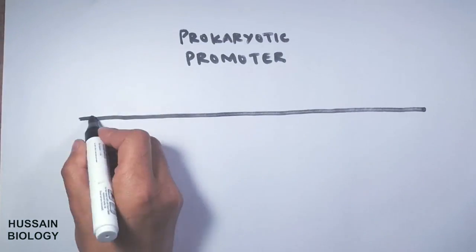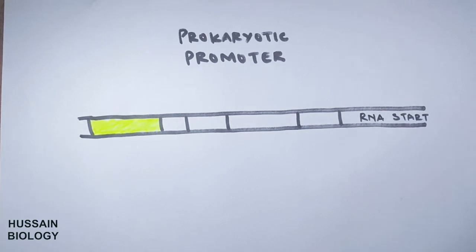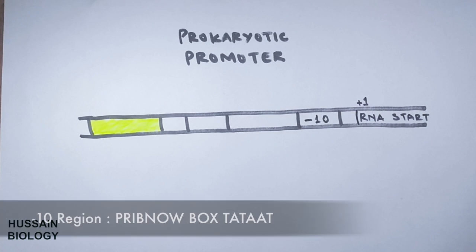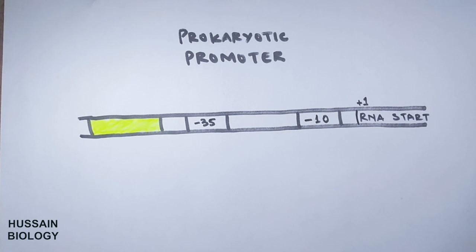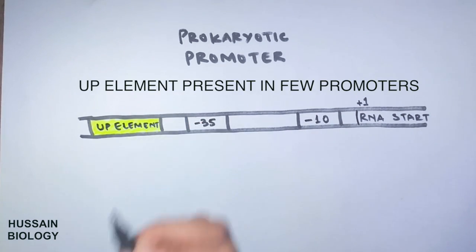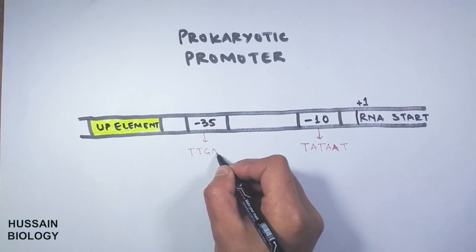Now let's look at the prokaryotic promoter. It has an RNA start point where transcription starts, which is the plus one position. Then it has the minus 10 region called the Pribnow box, followed by the minus 35 region. Prokaryotes also have an up element, as shown in the diagram. The minus 10 region has the consensus sequence TATAAT, while the minus 35 region has the sequence TTGACA.